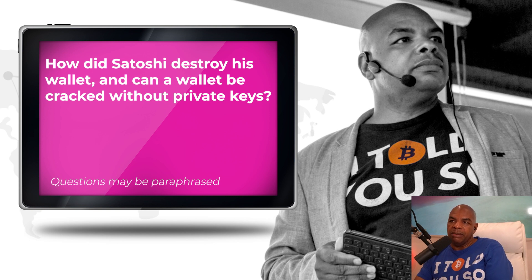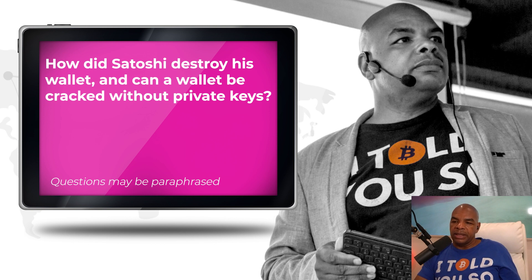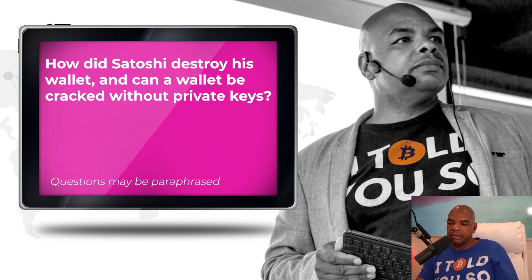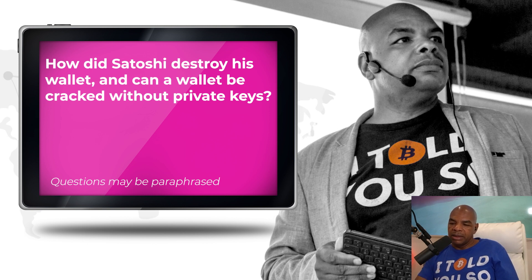The wallet address is a one-way encrypted value, meaning you can't determine what the original data was from the output. You can only take the original data and convert it to the hash, then confirm it matches. For example, you take your public key, hash it, and get your address — you can verify the public key matches the address, but you can't go from an address back to a public key. There's no way to do it.